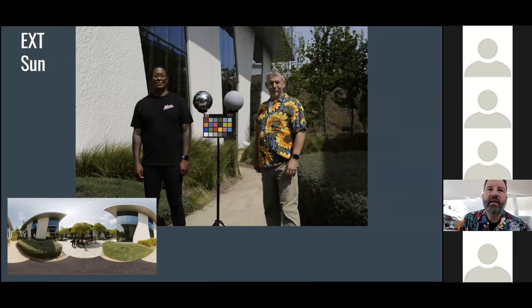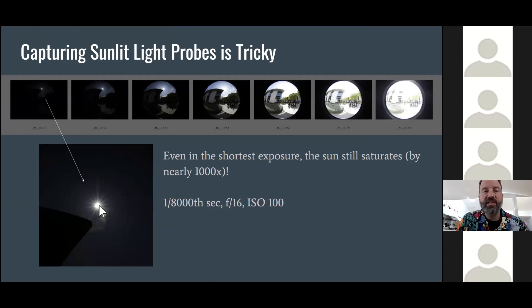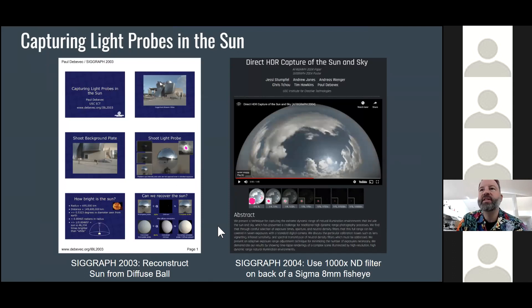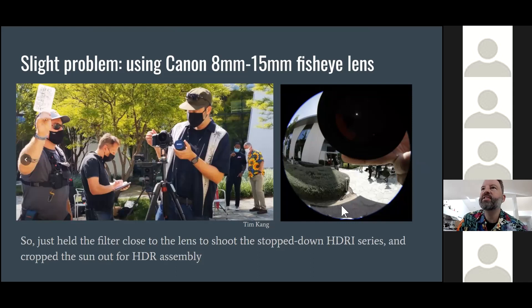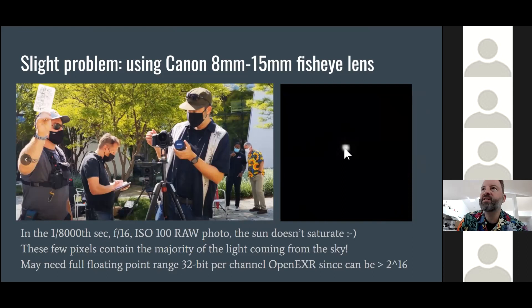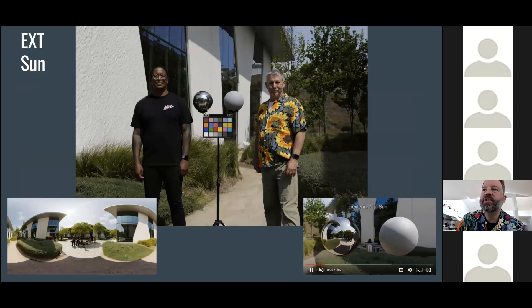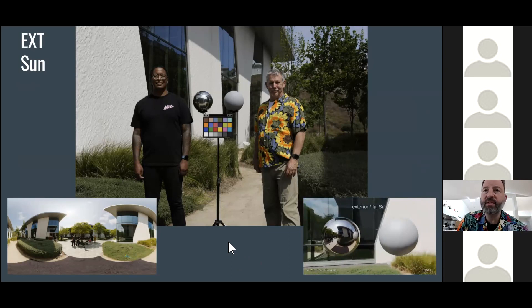The sun is about 50,000 times as bright as the sky around it. To capture the full dynamic range, we have to deal with the fact that the sun tends to saturate even in the shortest 1/8000th of a second exposure in an HDR series. We've done research on recording the full intensity of the sun using 1000x neutral density filters. Weta developed a nice process where you screw a 1000x ND filter onto the Sigma fisheye lens and capture another HDR series that actually captures the sun's intensity — at 1/8000th of a second it doesn't saturate, so you get a correct recording of sun intensity and a complete HDRI map.